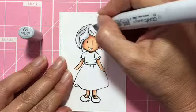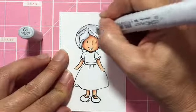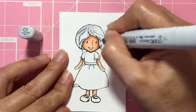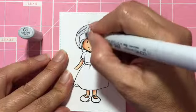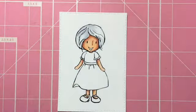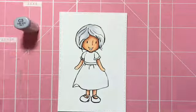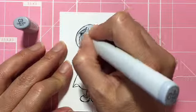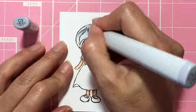I'm starting with C1 and I'm just laying out some color in the areas where I think I want the darker shading to be. I start sometimes with the lightest color just to give myself an idea of how it's going to look.